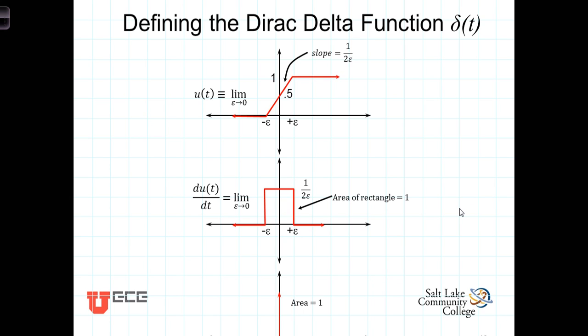The second of these special functions that we'll now introduce is known as the delta function, or the impulse function. This function represents a signal of infinite amplitude and zero duration.